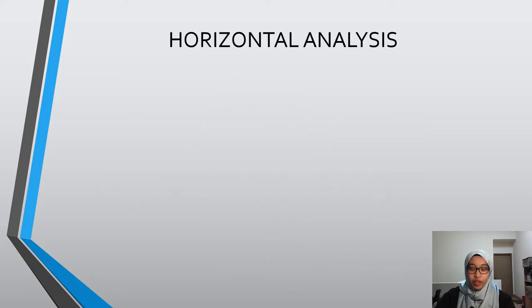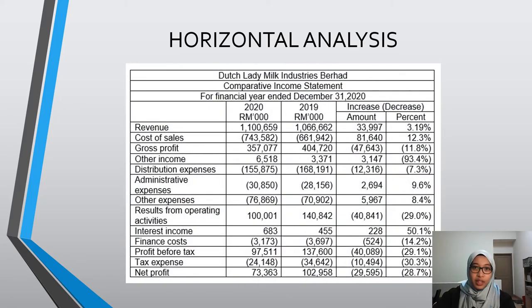I'm going to start with horizontal analysis. This analysis measures the changes in percentage — whether it increases or decreases — for each item in the income statement. We will start with Dutch Lady Milk Industries Berhad. To get the percentage, we minus the current year amount from the prior year amount, then divide by the prior year amount. If the answer is positive, it increased; if negative, it decreased.